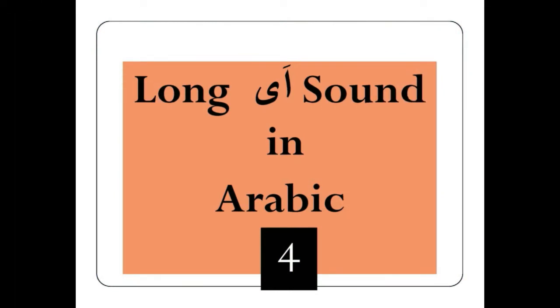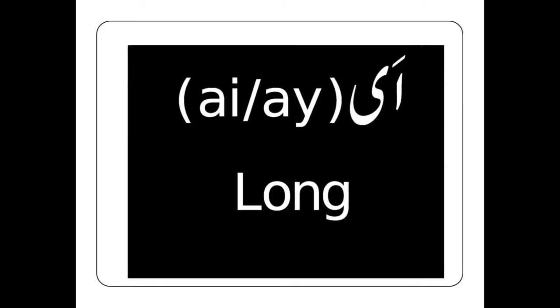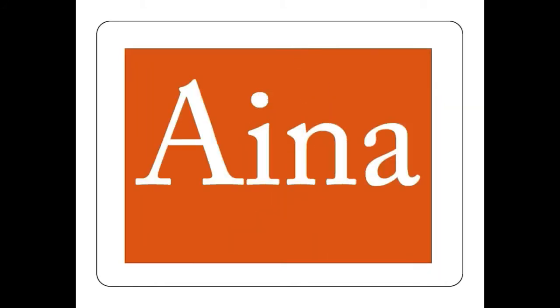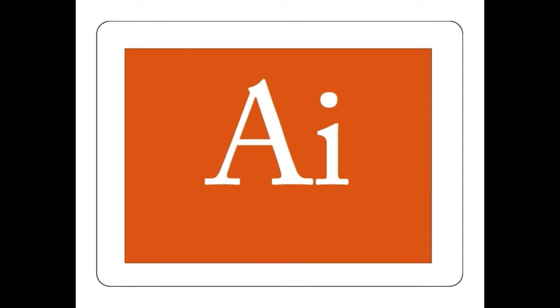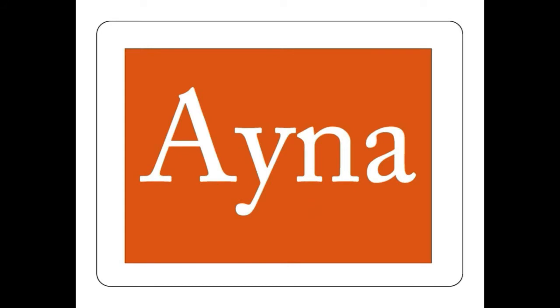The next sound of our lesson is the long 'I' sound in Arabic. We can see the long 'I' sound in Arabic. Which spelling is for 'I'? It can be spelled A-I, and also A-Y. One word is A-I-N-A. We can write A-I-N-A for the long 'I', or A-Y-N-A also.